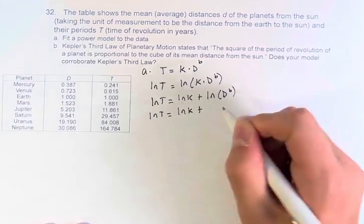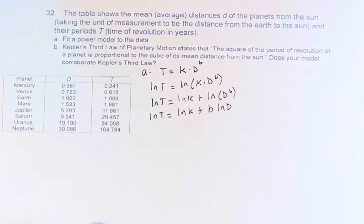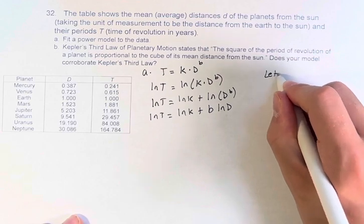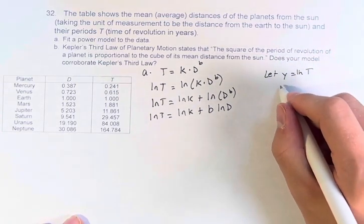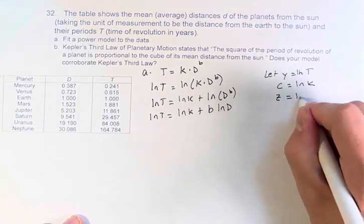Natural log of k plus, if we have an exponent, we can bring it out as a coefficient, b times ln of d. And now, if we say, okay, let y equal ln of t, let c equal ln of k, and let z equal ln of d.